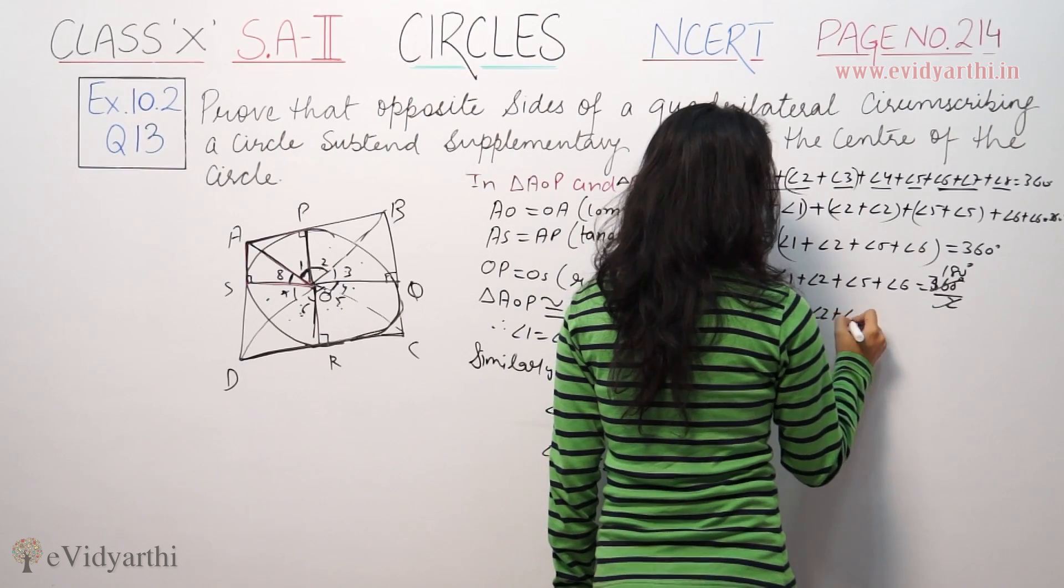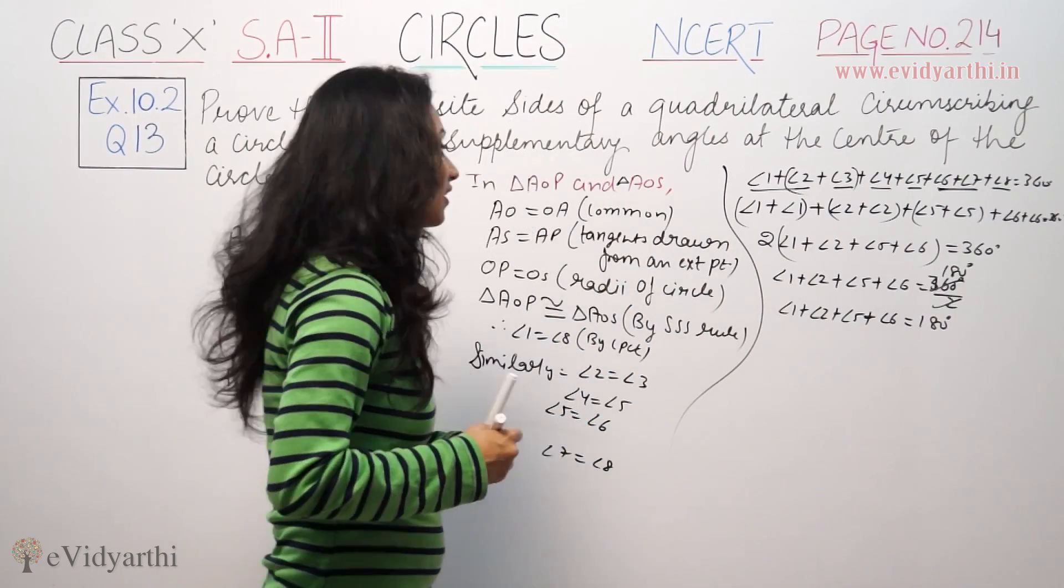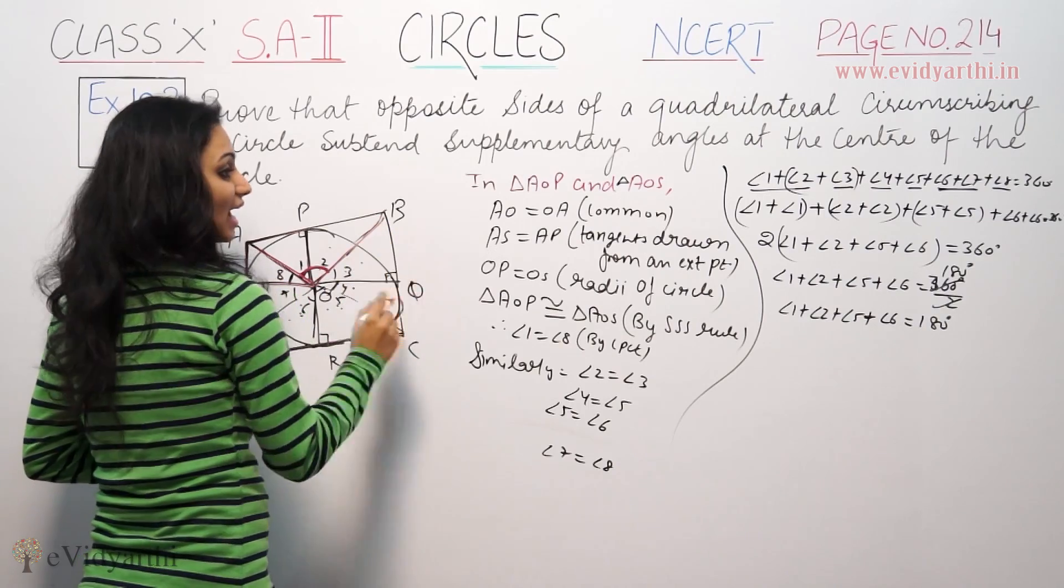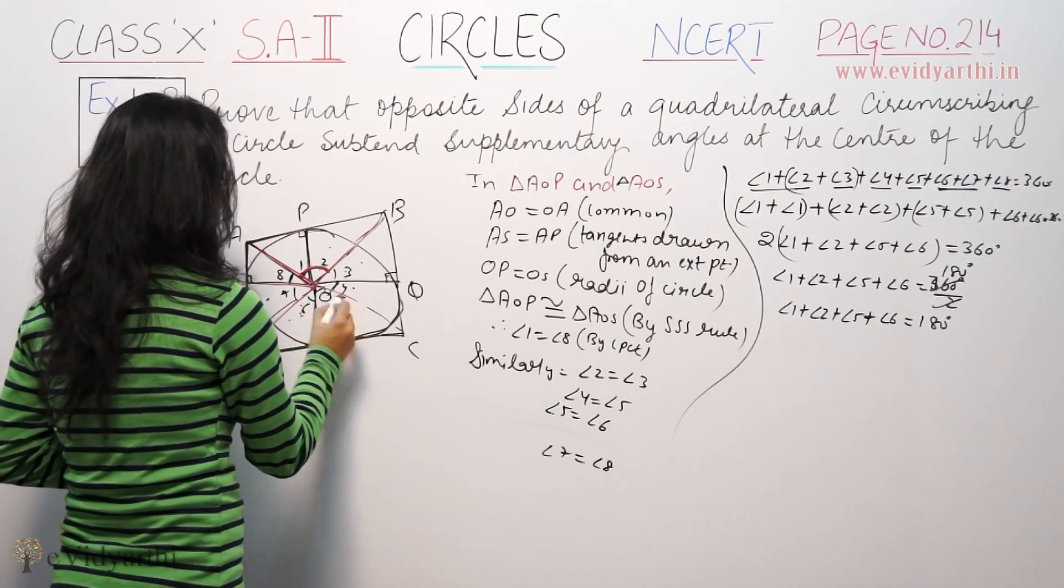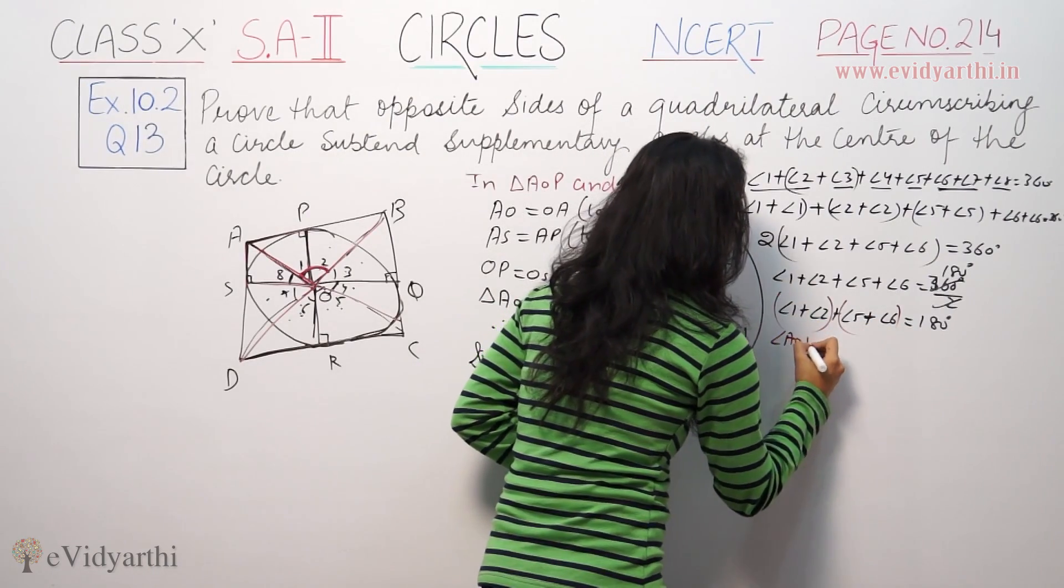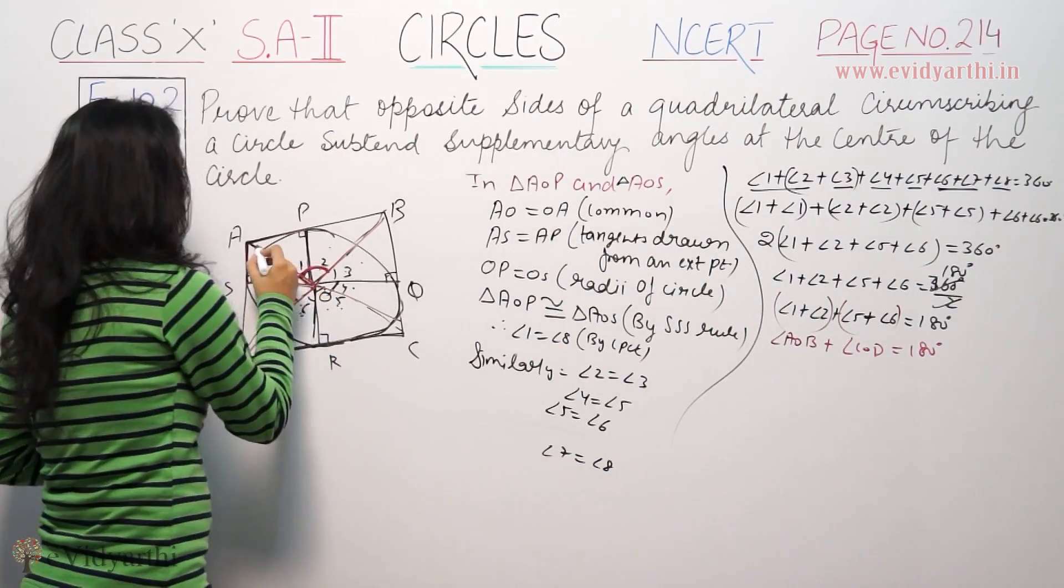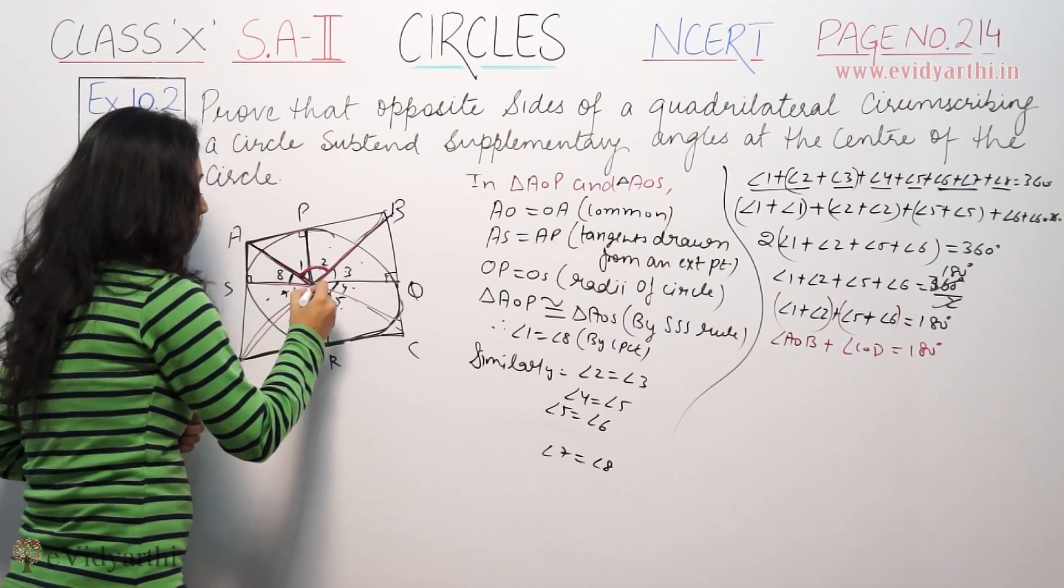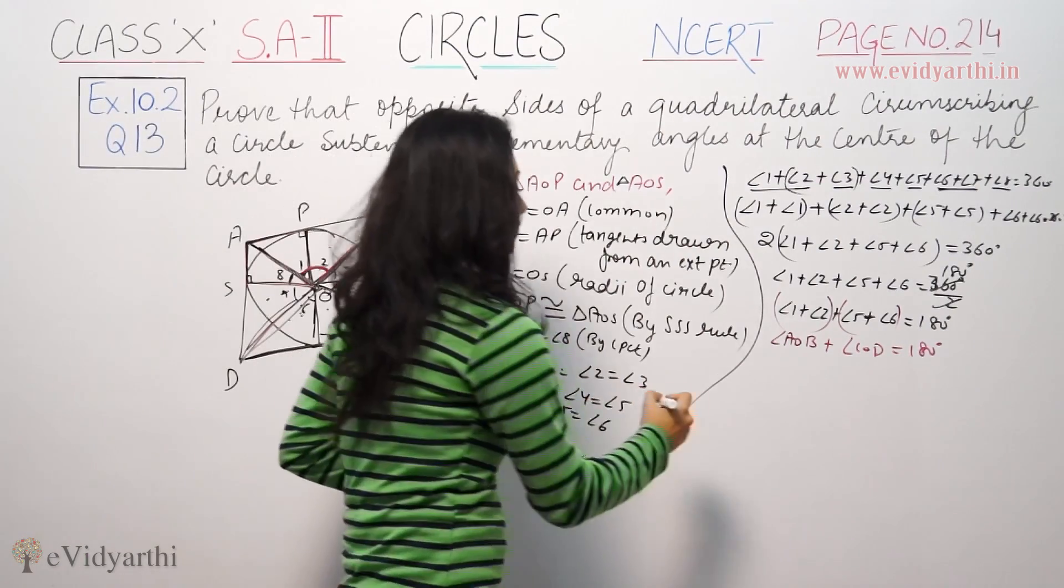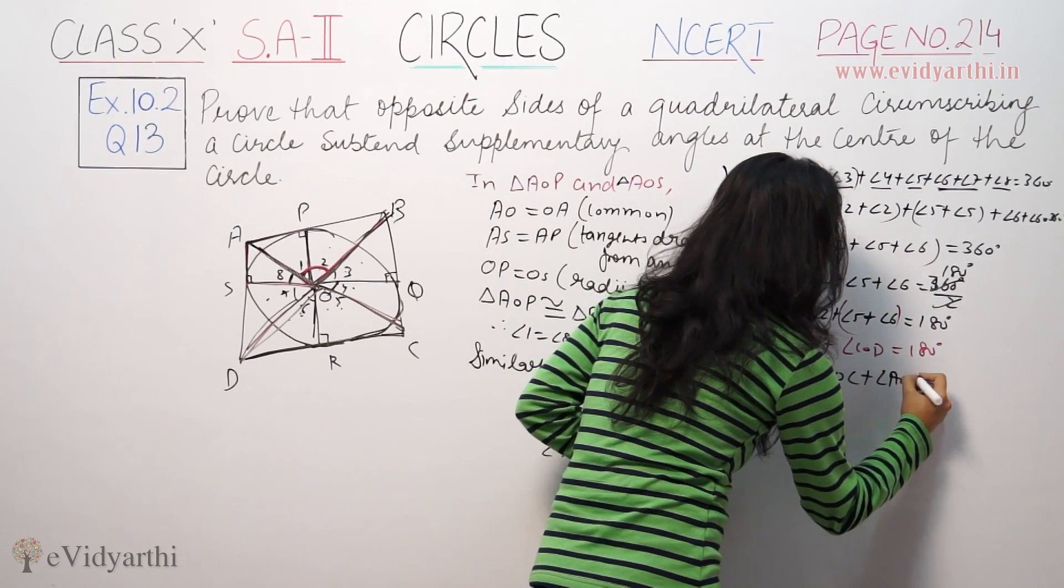Dividing by 2, angle 1 plus angle 2 plus angle 5 plus angle 6 equals 180 degrees. Therefore, angle 1 plus angle 2 equals angle POQ, and angle 5 plus angle 6 equals angle ROS. So opposite angles at the center, POQ and ROS, are supplementary.